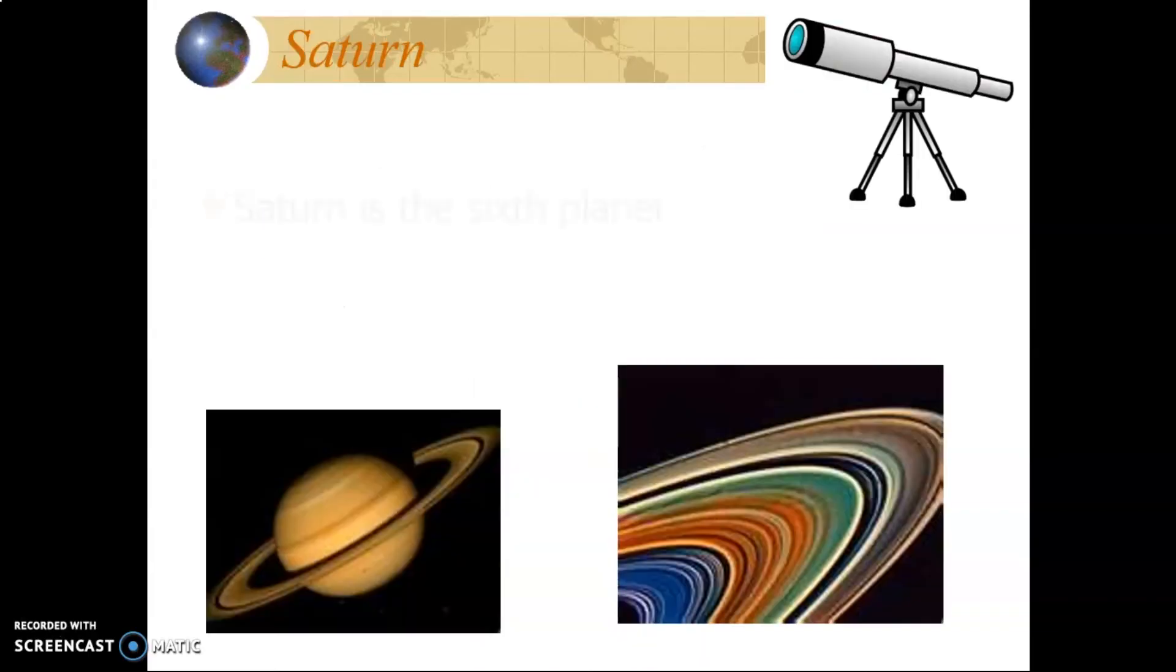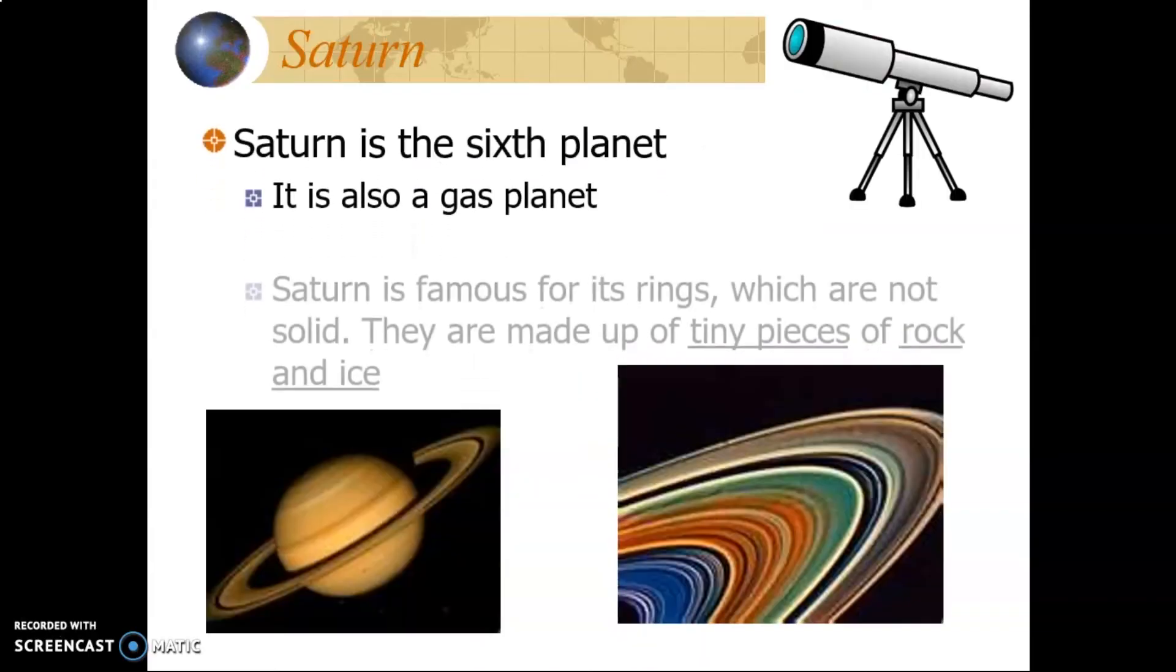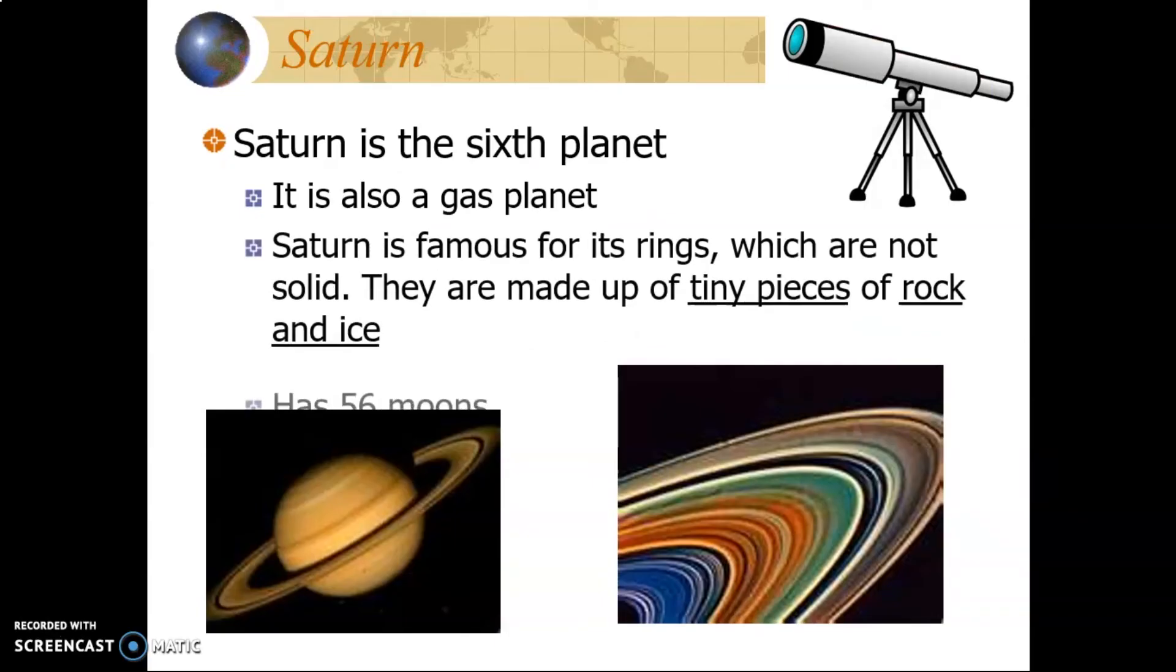Next, we have Saturn. It is another gas giant and is famous for its rings. The rings around Saturn are not solid, but are made of tiny pieces of rock and ice.